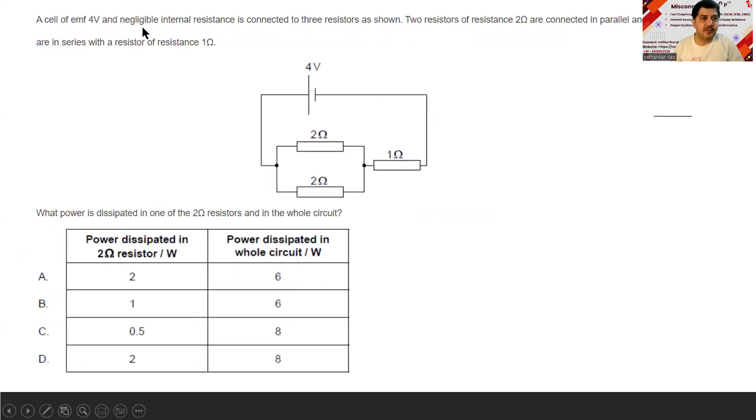Then a cell of EMF 4V and negligible internal resistance is shown and two resistors of two Ohms are connected in parallel and in series with resistance of one Ohm. What power is dissipated in one of the two Ohm resistors and in the whole circuit? What is the power dissipated in one of the two Ohm resistor and in the whole circuit? There is a two Ohm here, two Ohm is here, not here. So therefore, what is the power dissipated either here or here? And what is the total power dissipated? Don't be in a hurry. Think about it clearly. Get a clarity and then solve it. So it's given here, power dissipated in a two Ohm resistor. You have to choose one of these options. Power dissipated in the whole circuit, this one here. So you need to work out both the things and then finally get the answer. Let us move on to the next one.